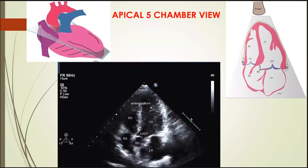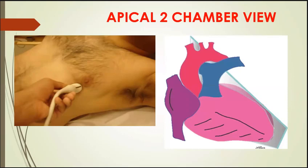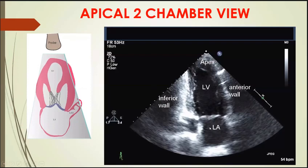Next is the apical two-chamber view. From the five-chamber position, we rotate the probe in an anti-clockwise direction about 30 to 40 degrees to get this view. Two-chamber means only two chambers are visible — the left-sided chambers: left atrium and left ventricle. The valve between them is the mitral valve.